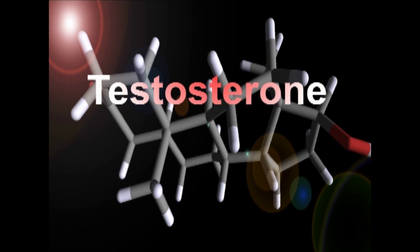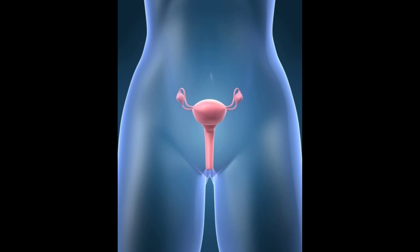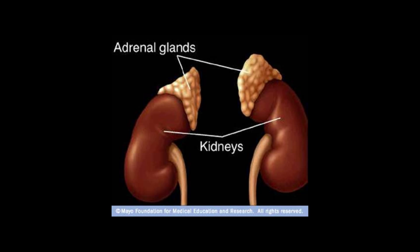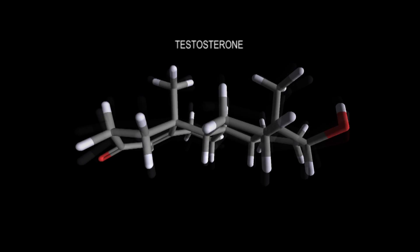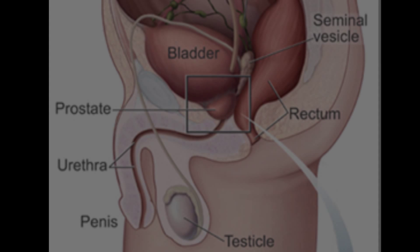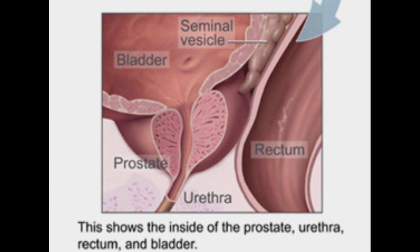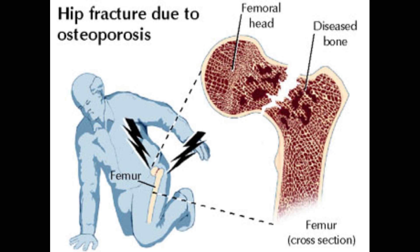Testosterone is a steroid hormone from the androgen group. In mammals, testosterone is primarily secreted in the testes of males and the ovaries of females, although small amounts are also secreted by the adrenal glands. It is the principal male sex hormone and an anabolic steroid. Testosterone is evolutionarily conserved through most vertebrates, although fish make a slightly different form called 11-ketotestosterone. In men, testosterone plays a key role in the development of male reproductive tissues such as the testes and prostate, as well as promoting secondary sexual characteristics such as increased muscle and bone mass and hair growth. Testosterone is also essential for health and well-being, as well as preventing osteoporosis.